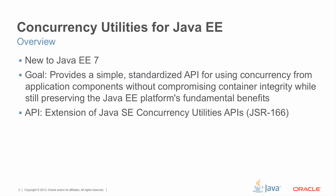Concurrency Utilities for Java EE is a new addition to the Java EE 7 platform. The goal of this JSR is to provide a simple standardized API for using concurrency from Java EE application components without compromising container integrity, while still preserving the Java EE platform's fundamental benefits. The APIs are mainly extensions from the Java SE concurrency utilities. Developers already familiar with the APIs in the Java Util Concurrent package, in particular the ExecutorService and ThreadFactory interfaces, should find it very easy to adapt to the APIs provided by this JSR.